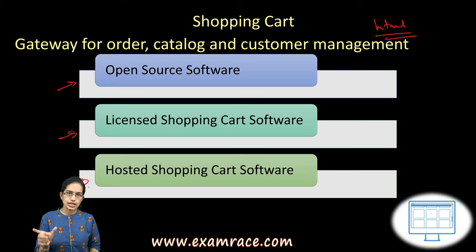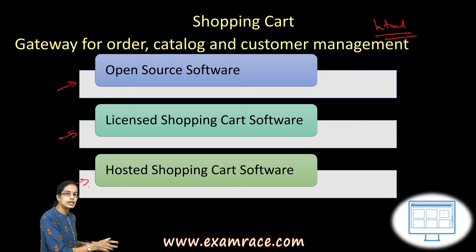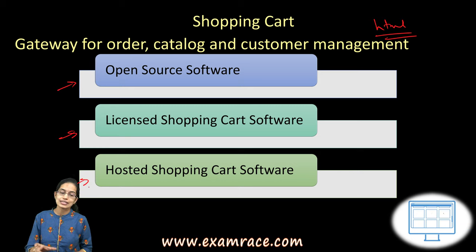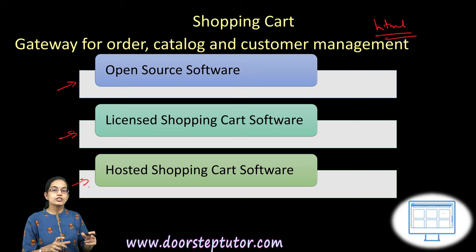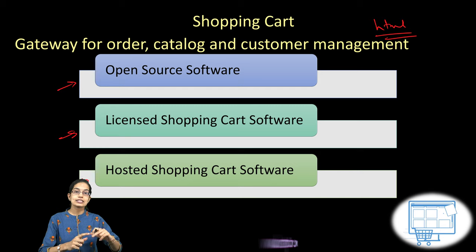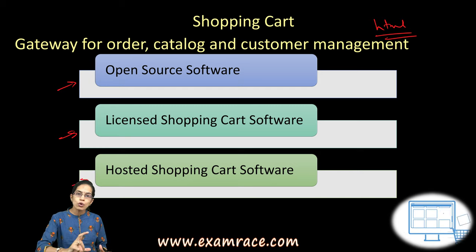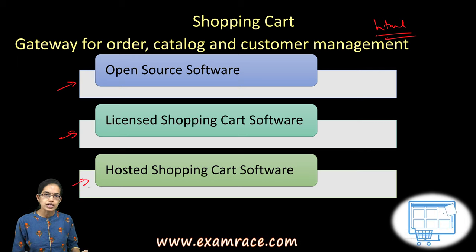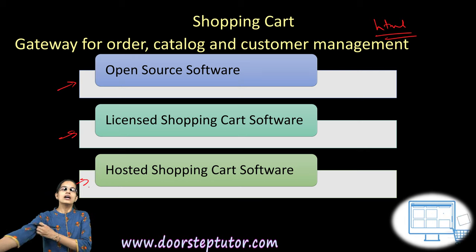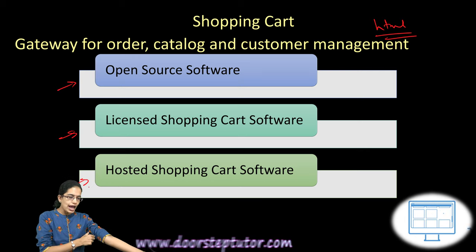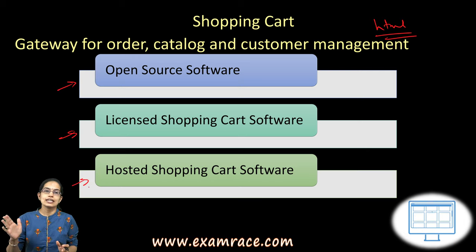The second is a licensed shopping cart software. Under a licensed software you are allowed to build your own cart, customize it, and there is greater flexibility and options you can add. For example, you can include service requests or warranty with the product. There are more chances of creating flexibilities with the product, and there are also provisions to add third-party tools.